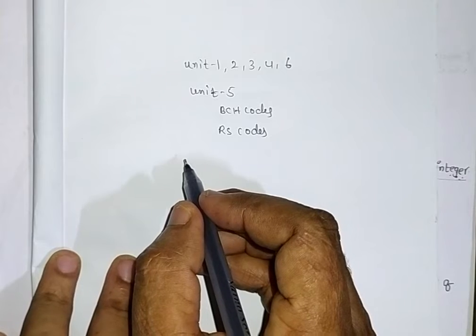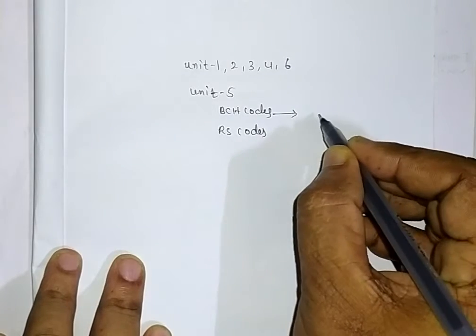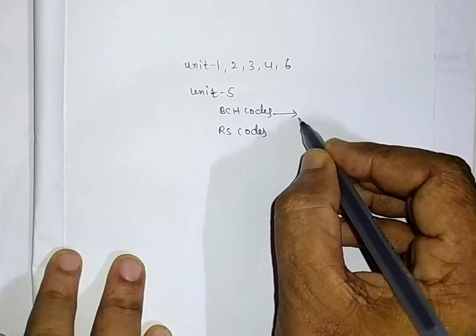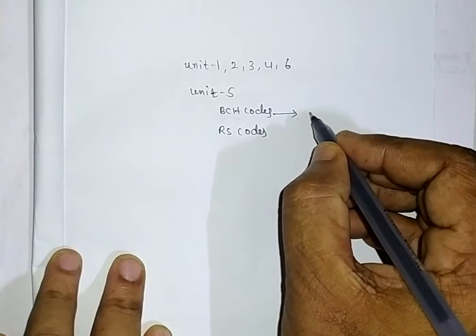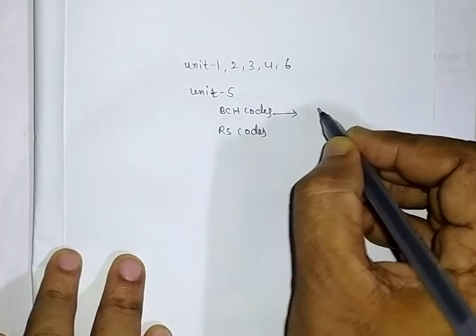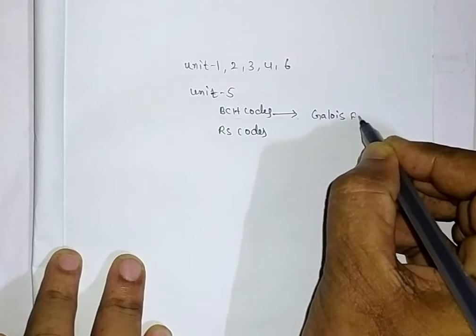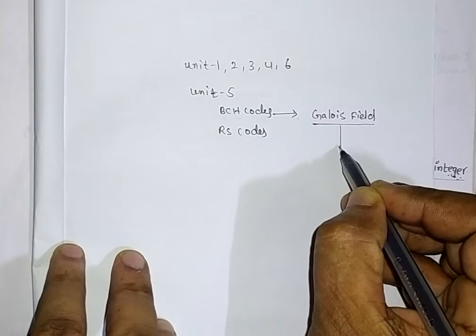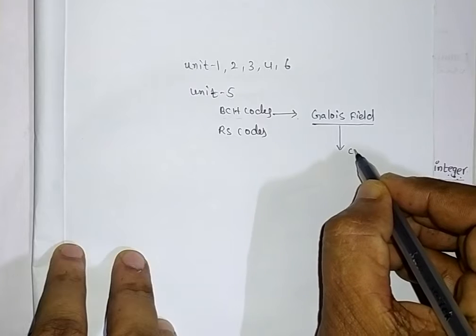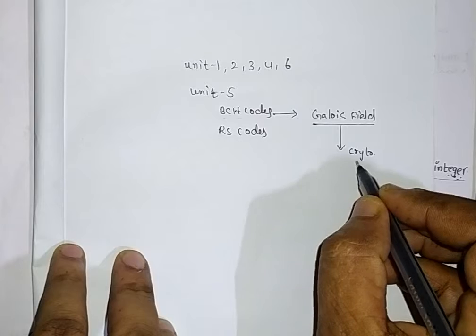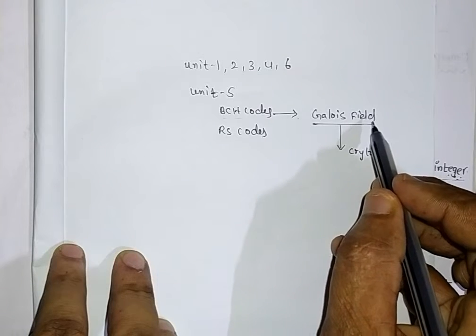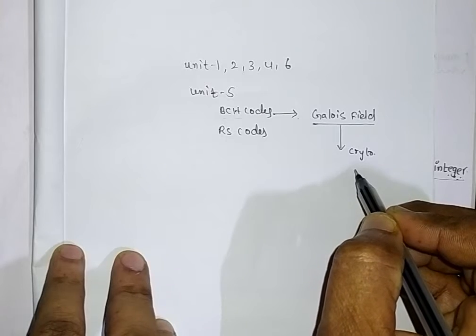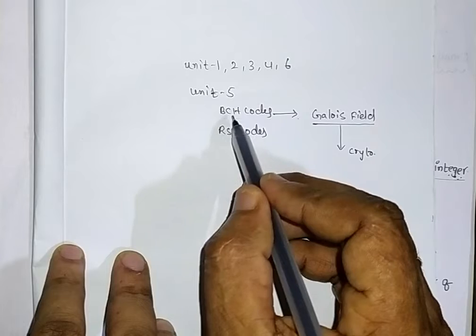In this particular lecture, I am going to discuss the things required for BCH codes — that means the basic things required to understand the concepts associated with BCH codes. Those concepts are the Galois field. The Galois field has applications in cryptography and coding theory.